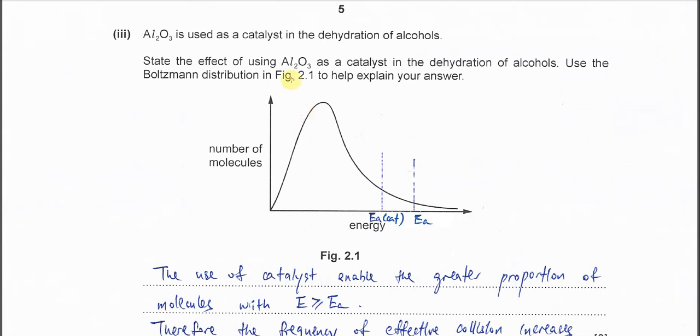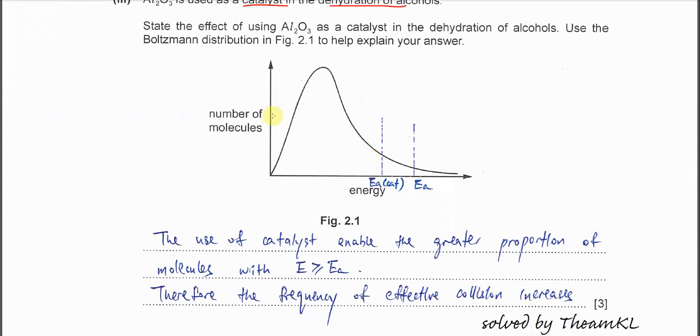Part 3: Aluminum oxide is used as a catalyst for dehydration of alcohol. The Boltzmann distribution is given in figure 2.1. State the effects of using this aluminum oxide catalyst. Very easy, just a general explanation about the catalyst in the Boltzmann distribution. This one is without catalyst. When we use a catalyst, you lower the energy. When we say lower energy, it goes to left. You put another EA with catalyst, so the EA must be lower energy here, at any point. After the EA here, you put EA cat.